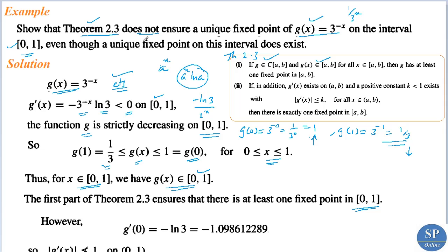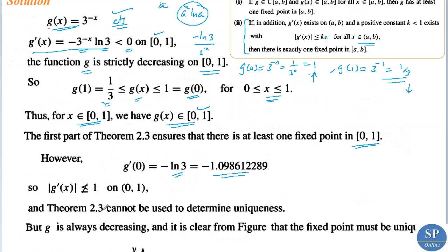For uniqueness, we need |g'(x)| ≤ k < 1 for all x in [0, 1]. Evaluating at x = 0: g'(0) = -3^0 · ln(3) = -ln(3) ≈ -1.09861. So |g'(0)| ≈ 1.099, which is not less than or equal to 1. Therefore, the second condition of Theorem 2.3 is not satisfied, and the theorem cannot be used to determine uniqueness.